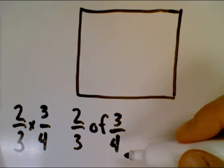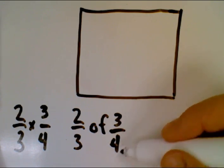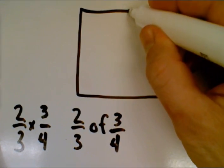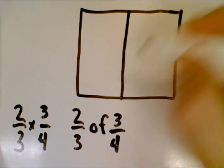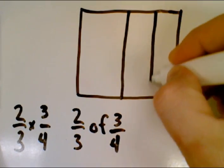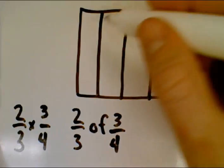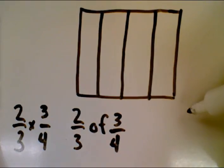Three-quarters is our first thing that we're going to represent since we're doing two-thirds of that. So we have to break our whole into quarters, into fourths. I'm going to break into halves and then break it into halves again. So we've broken it into four equal vertical pieces.